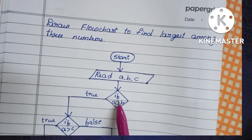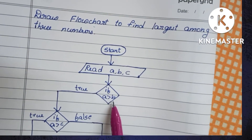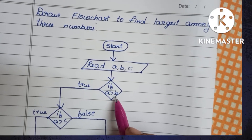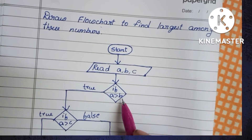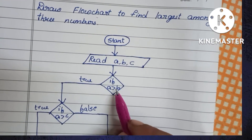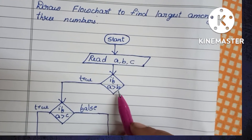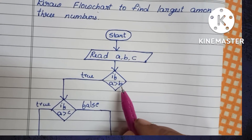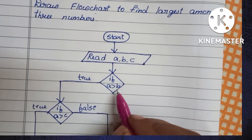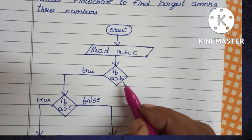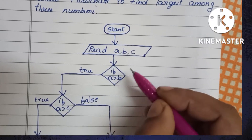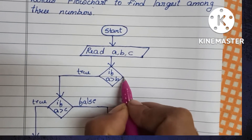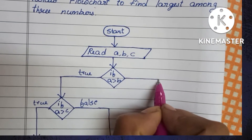Next, if A greater than B is false, then B is greater. In that case, we have to compare B with C.